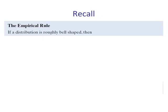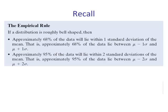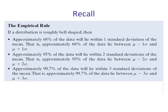Lesson objective number one: the empirical rule. If a distribution is roughly bell-shaped, then approximately 68% of the data will lie within one standard deviation of the mean. Approximately 95% of the data lie within two standard deviations of the mean. Approximately 99.7% of the data will lie within three standard deviations of the mean, containing almost all the data.